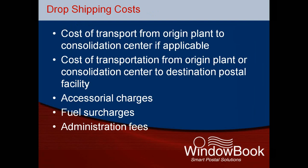There are costs associated with dropshipping which must be taken into account when analyzing mailings for dropship potential. If you are using a consolidation service, there is the cost of transporting the mail from the printing plant or letter shop to a logistics provider consolidation center. Consolidation services are used by many mailers who do not have sufficient volume on their own to fill trucks to destination postal facilities. By combining the mail volume from numerous printers and letter shops, consolidators can optimize the filling of truckloads to these destinations, thereby keeping the costs down and spreading those costs among multiple printers or letter shops. Then there is the cost of transporting the mail to the destination postal facilities, such as the NDCs and SCFs, either from the origin plant or from the consolidation center.